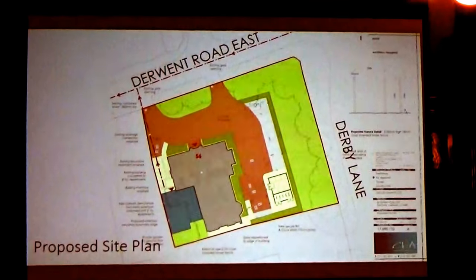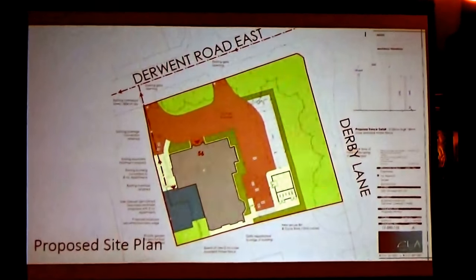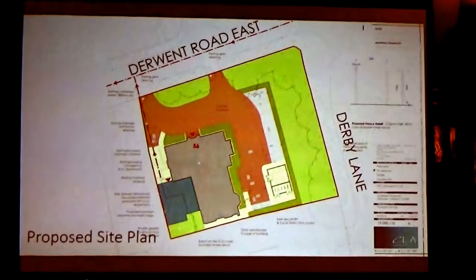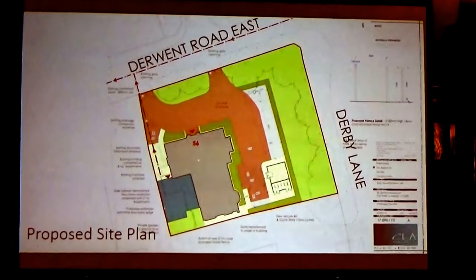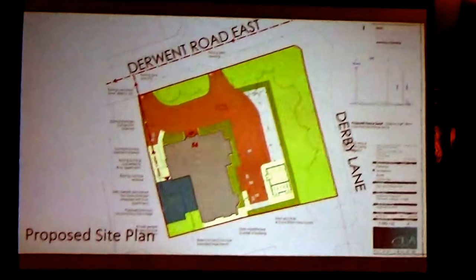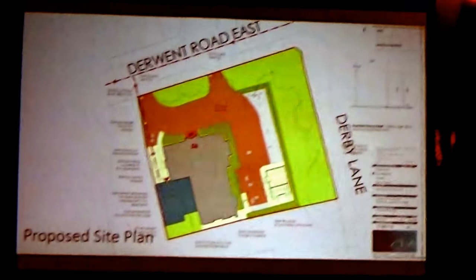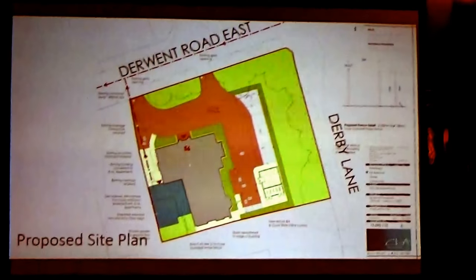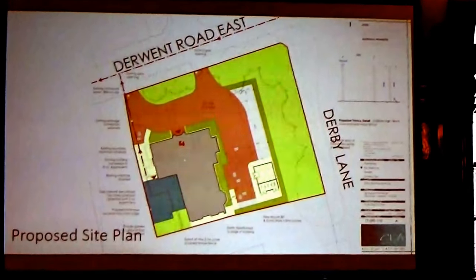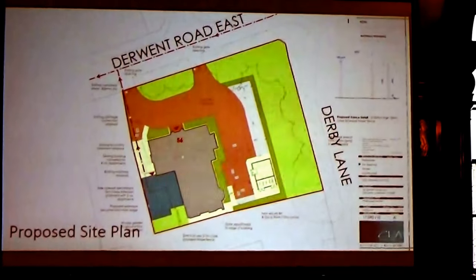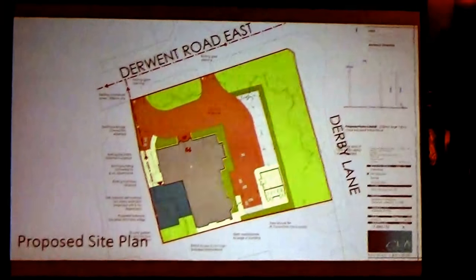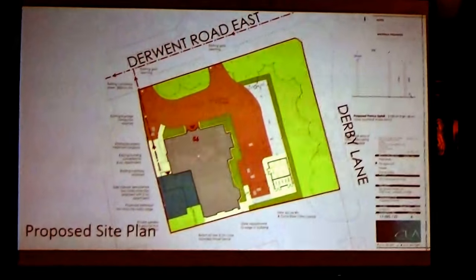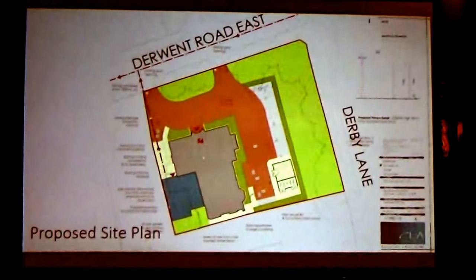The proposal is to demolish the two side extensions just shown. The greeny blue in the left hand corner is the proposed extension. Essentially what we're looking to do is converting the existing property into ten apartments. There will be eight apartments in the existing building and two apartments in the extension, one on each floor — ground floor and first floor — so ten apartments in total. The basement will not be used for accommodation. In total there are five two-bedroom and five one-bedroom apartments proposed.